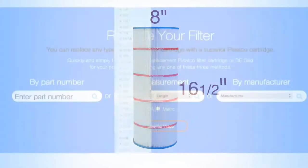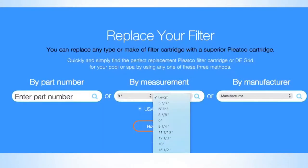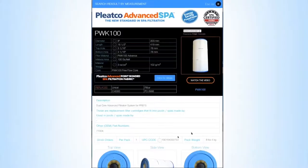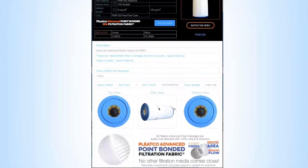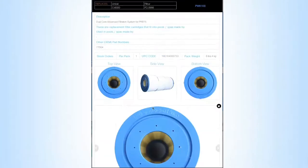Once you have these two measurements, simply use the Pleatco filter finder and select the measurements in the drop-down menu. You will be presented with a cartridge. Photos are supplied to visually check against.